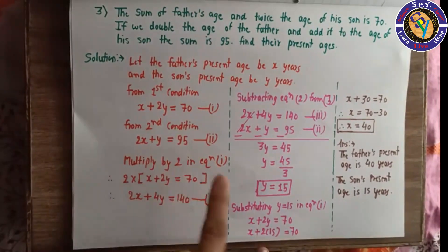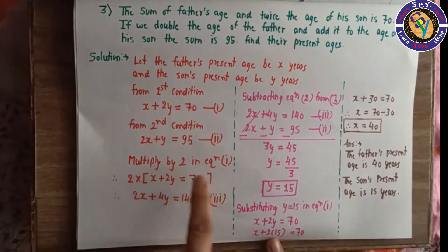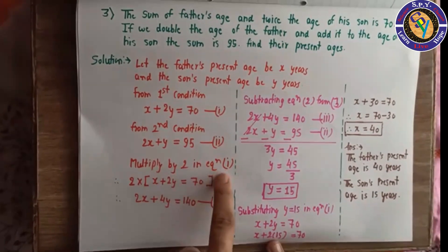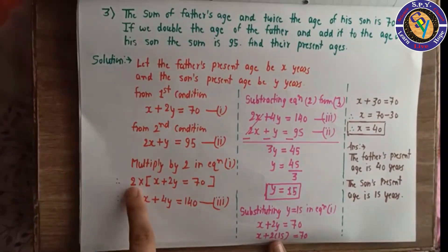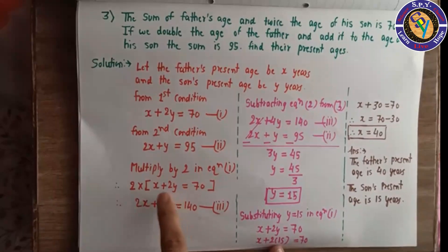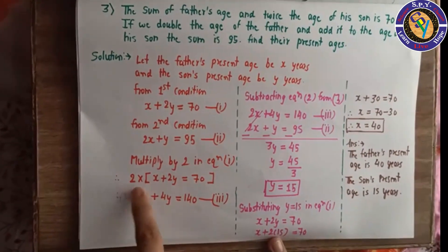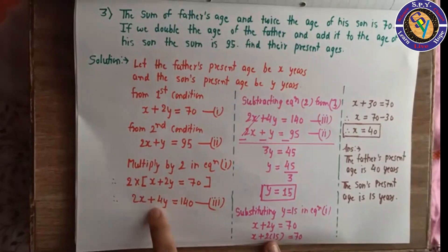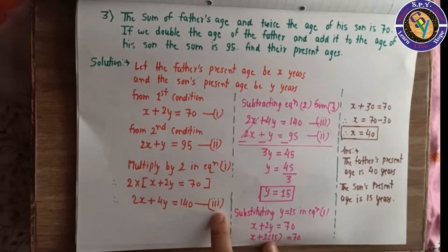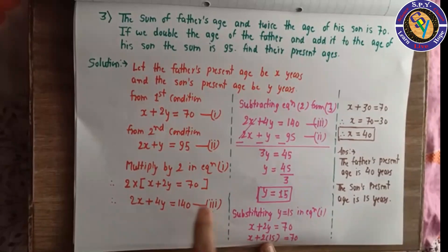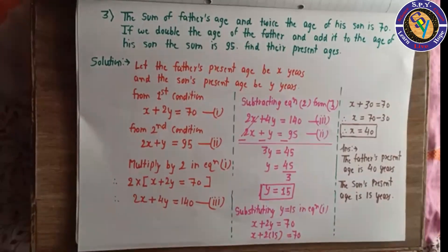From the second condition: twice the father's age plus the son's age equals 95, so 2x plus y equals 95. This is equation number 2.